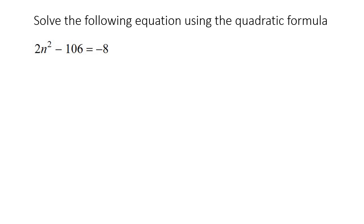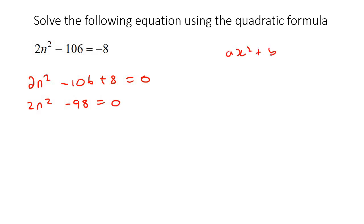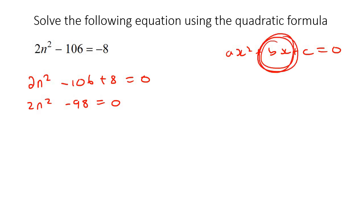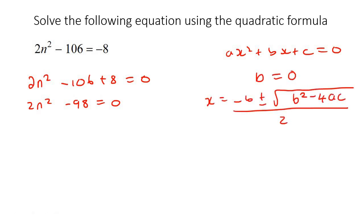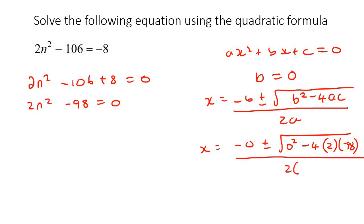Two more examples. This one, we need to bring that 8 over first. So negative 106 plus 8 equals to 0, giving us 2n squared minus 98 equals to 0. Now, in the formula ax squared plus bx plus c equals to 0, what don't we have? Well, we've got the x squared — the letter doesn't really matter. We don't have the b term — there's no n with a coefficient. But that's okay, we just say that b will be 0. So in the formula, a will just be 2, but b is 0.